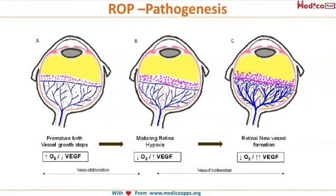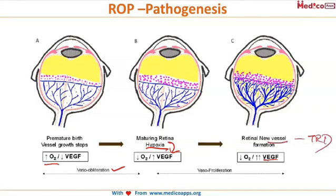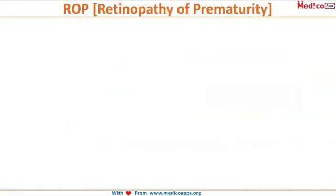Increased oxygen supply in the NICU causes vaso-obliteration leading to hypoxia, which results in increased VEGF supply. When there is VEGF, new vessels form, and this leads to tractional retinal detachment.